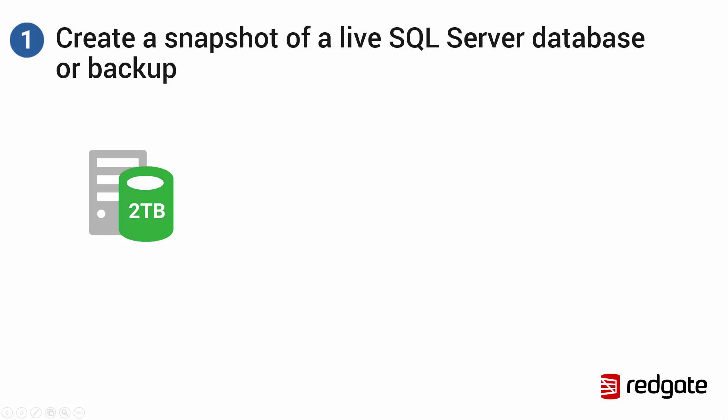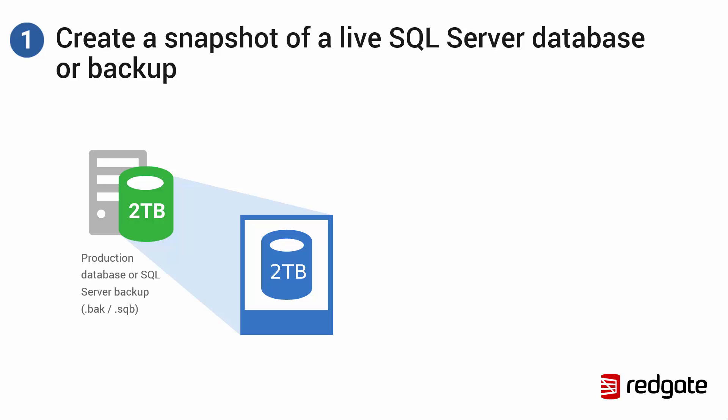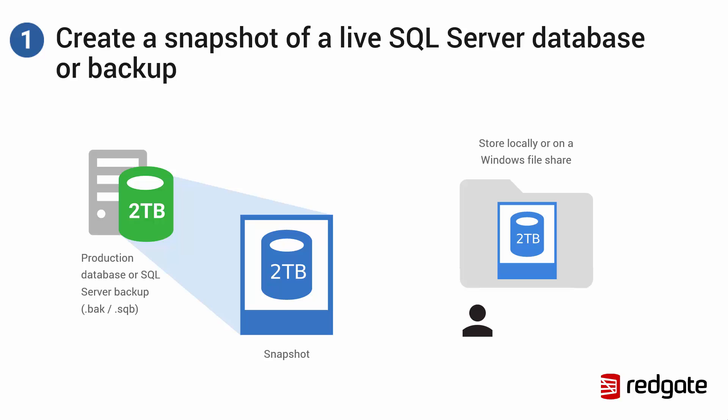Start by creating a snapshot of the production database or SQL backup that you wish to clone. A snapshot is a full copy of the database or backup at a point in time and contains the source data from which the clones are derived. They can either be stored locally or shared with other machines by placing them on a Windows file share.